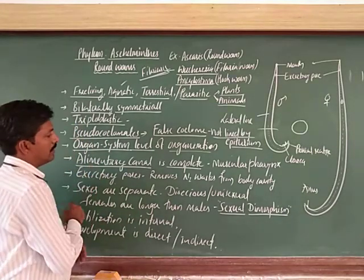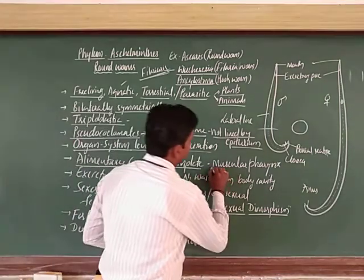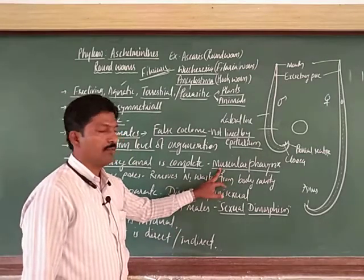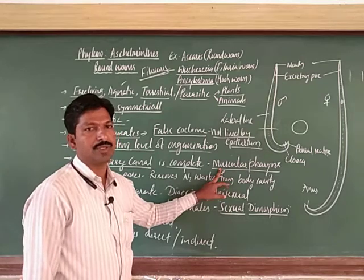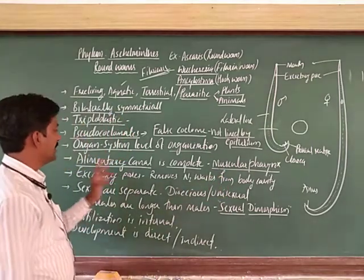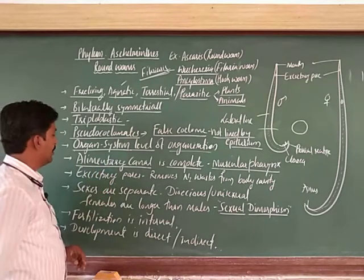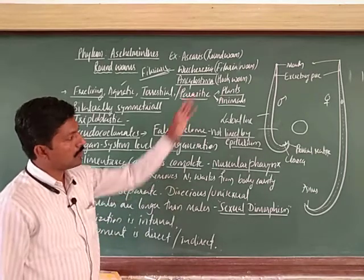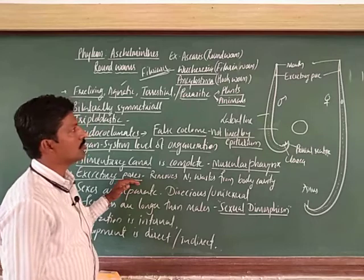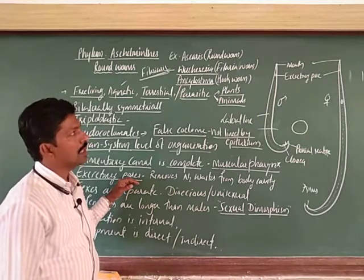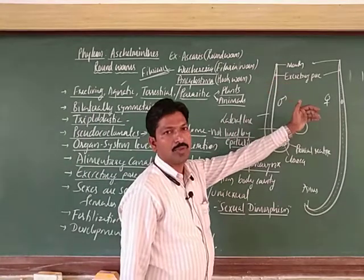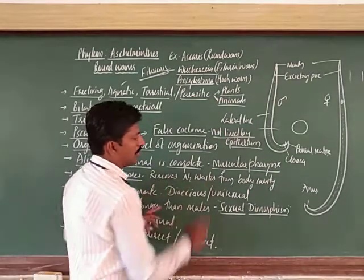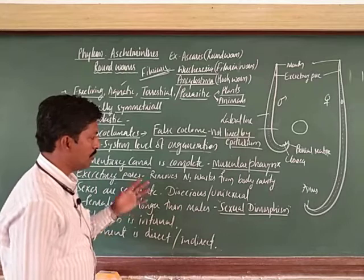Muscular pharynx is present. The muscular pharynx is developed — muscular tissue is improved here with the alimentary canal. Regarding excretion, there are longitudinal excretory canals along the body, and there is a presence of excretory pores to remove nitrogenous waste. Usually near the mouth there is an excretory pore. These excretory pores remove nitrogenous waste from the body.